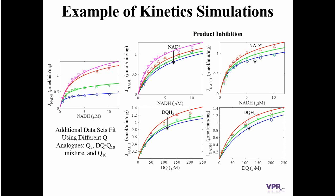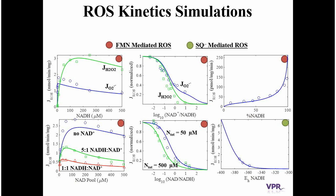Not only can we simulate the enzyme kinetics with our model, we can also simulate the ROS kinetics, shown here. The model is able to characterize ROS production from the FMN site, as well as the semiquinone site or the quinone reductase site. Furthermore, the model can simulate individual species of ROS production, whether it be hydrogen peroxide or superoxide, and it can do so across a range of conditions consisting of various concentrations of NADH or ratios of NAD to NADH.